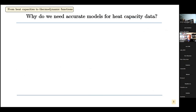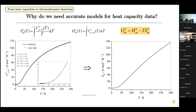Why do we need accurate models for heat capacity? Nowadays we have very precise calorimetric measurements for heat capacity down to very low temperatures. We want to describe that with a six-parameter fit using some constants and the Debye and Einstein temperatures. From that, we can calculate all other thermodynamic functions like entropy and Gibbs energy.